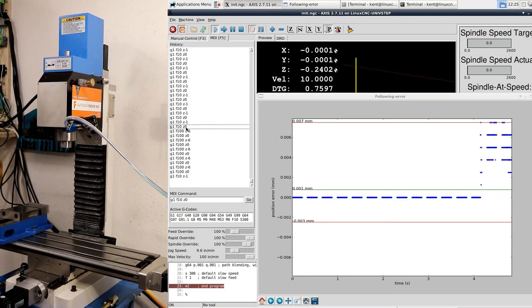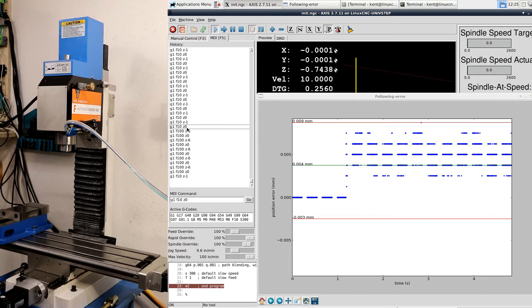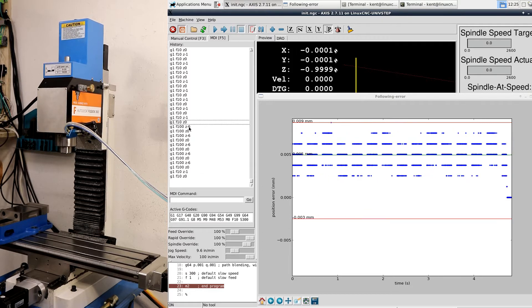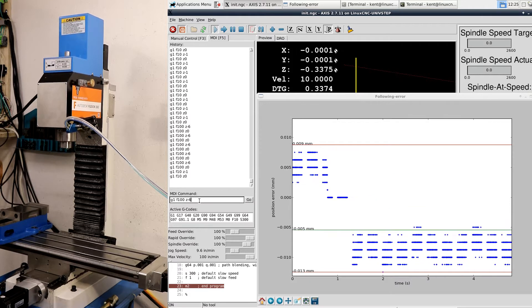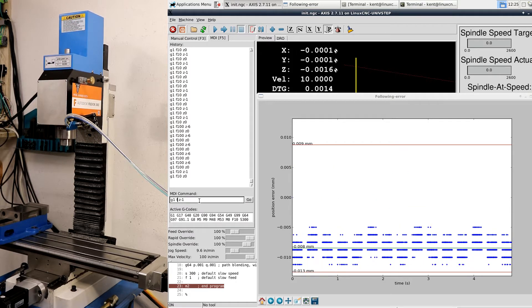This program is an implementation of a reverse engineered protocol and the program is plotting the following error from the EZ-Servo drive connected to the Z-axis. As we exercise the axis you can see the effect on the following error.